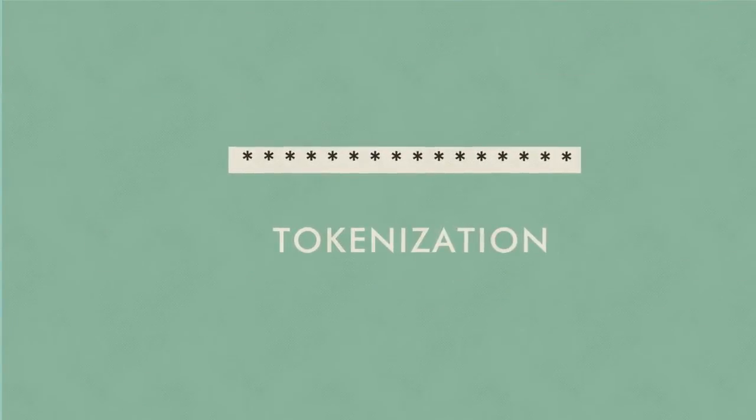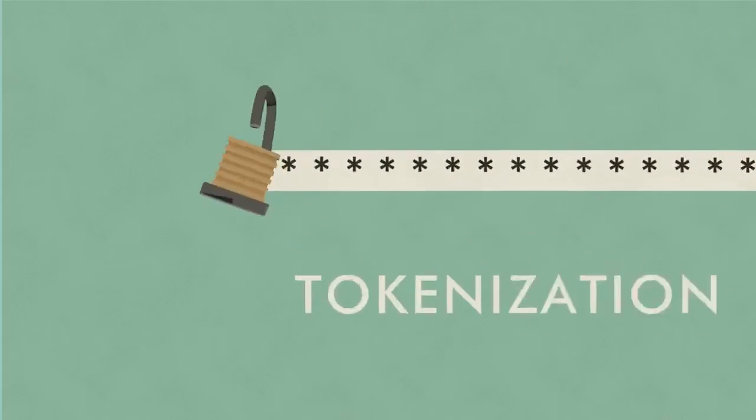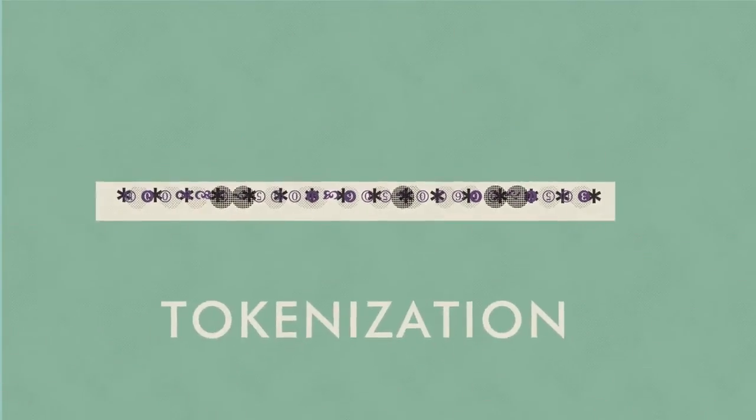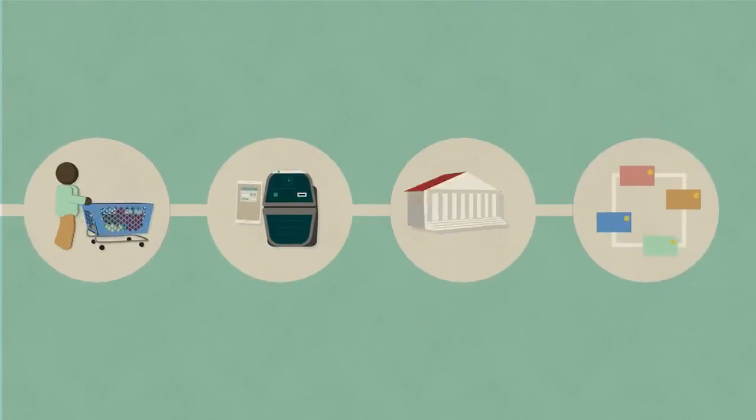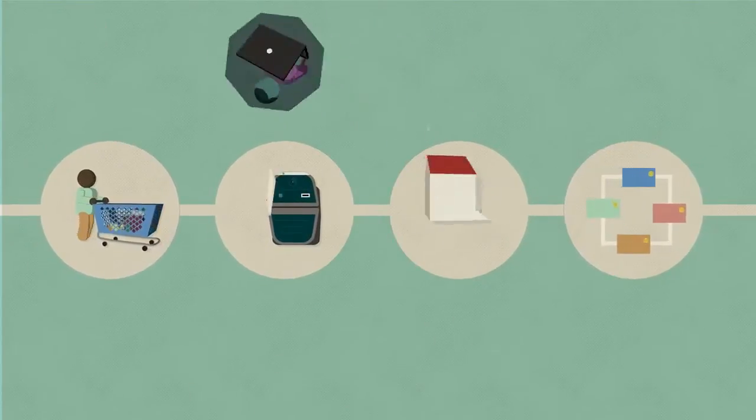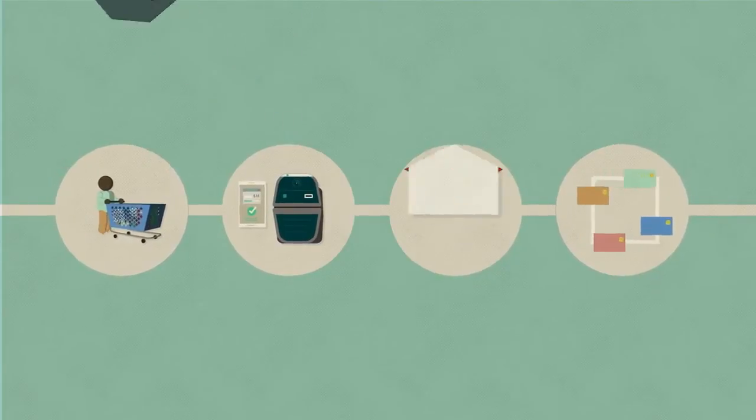And a new process called tokenization takes security to the next level. It works by replacing your account number with a set of unique symbols that can't be duplicated. So while your data is in transit or stored, you can rest assured that your account information can't be intercepted.